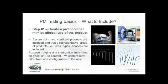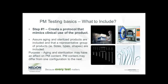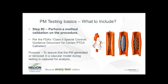The last part of step one is to assure that aging and sterilized products are included in the representative group of products that you'll be testing. Also, as a representative group, include different sizes, types, or shapes of your device. We recommend including different sizes — not just a worst-case scenario, but also maybe the smallest, somewhere in the medium, and the largest, if that applies to your device. The purpose of this is that aging and sterilization may have an effect on particulate matter content. We have definitely had sponsors whose submissions were kicked back for not including the variety of devices in their test scheme.